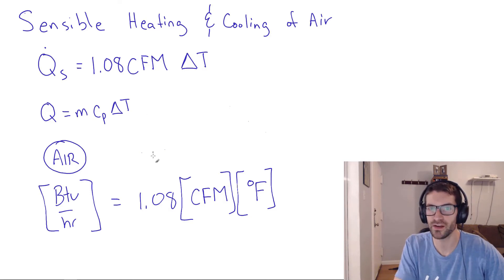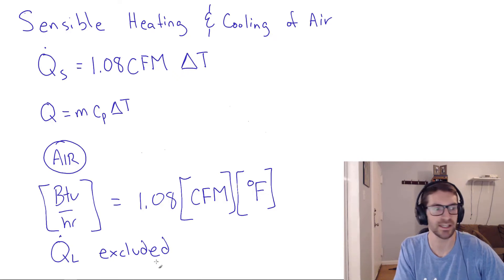The principle applies, but you'd have to come back to Q equals MC delta T and derive a separate rule with a different constant. The other thing I want to note here is that this excludes the latent heat. Latent heat also has its own formula, which we'll cover in a separate video. So the latent heat is excluded here.